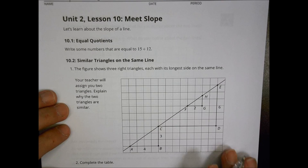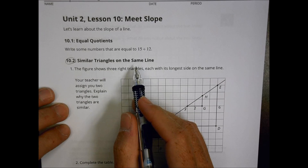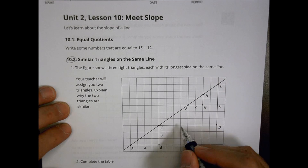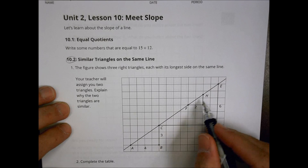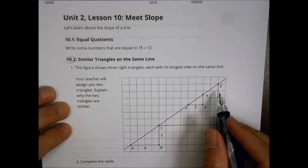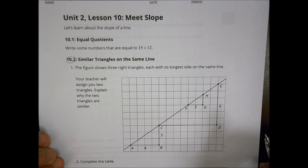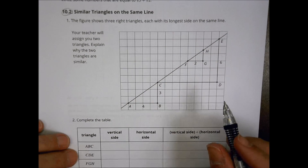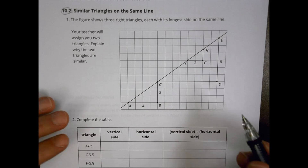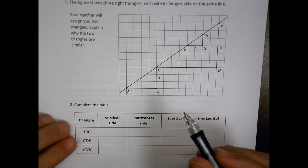So looking at number part two, which you worked on first today — similar triangles in the same line. The figure shows three right triangles, each with its long side on the same line. You're going to be assigned two triangles to take a look at by your teacher and talk about how they were similar to one another. This is a recap in case you missed the lesson today.